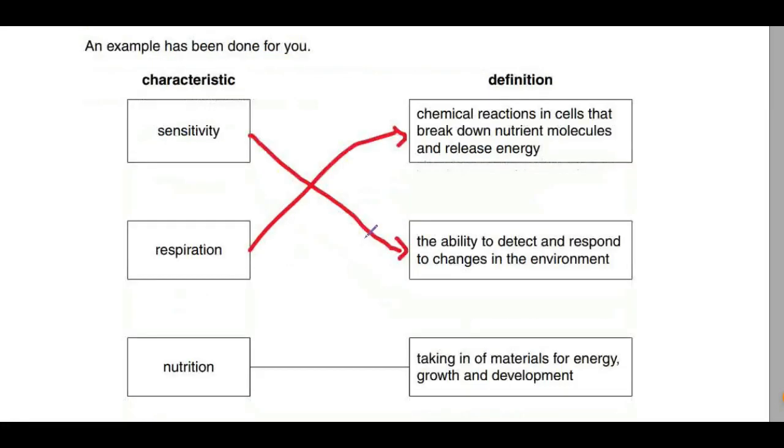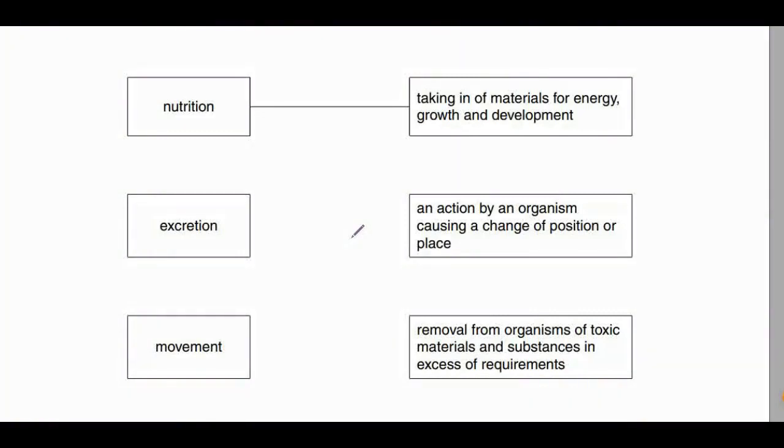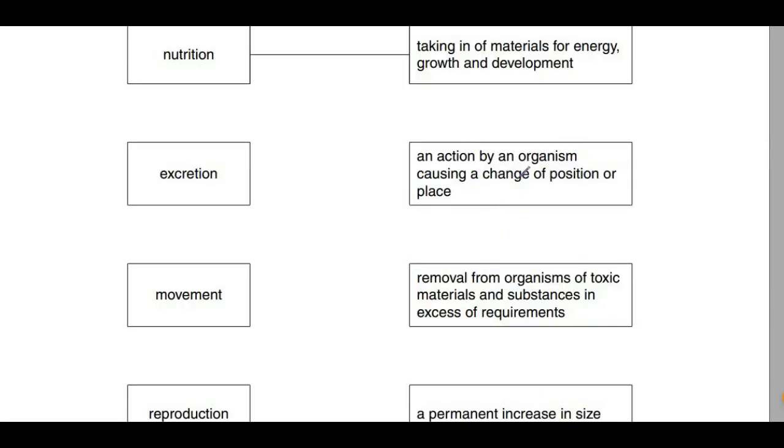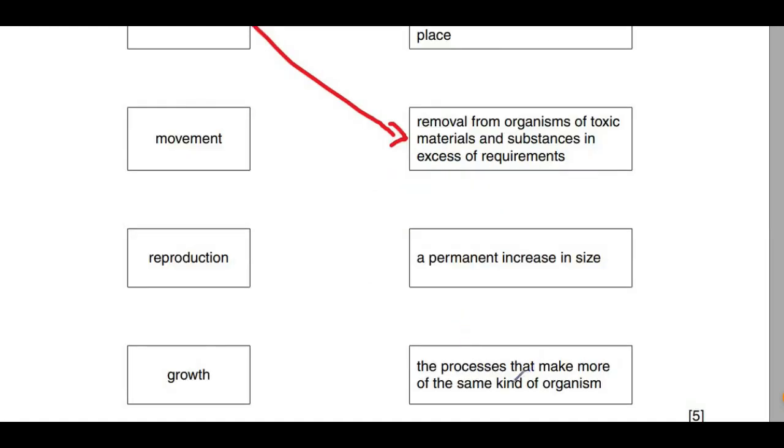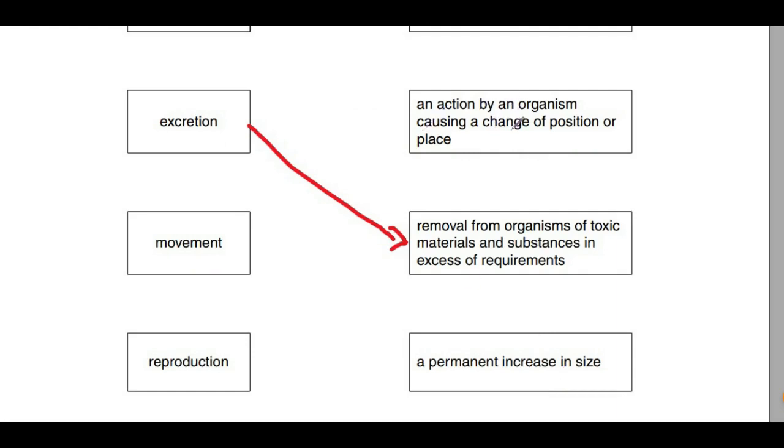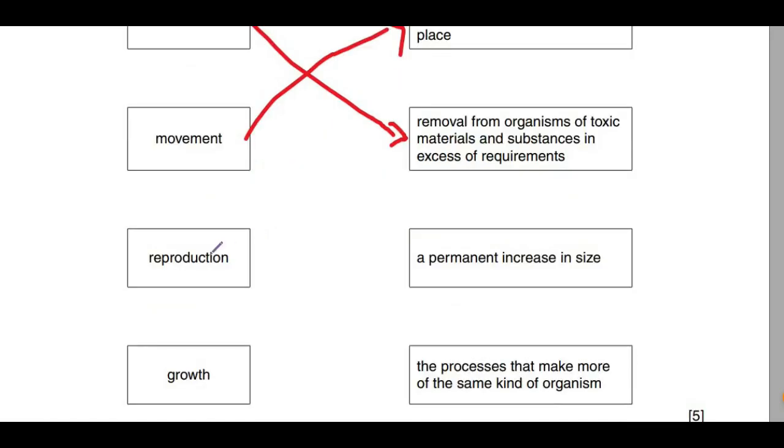Excretion is the removal of toxic metabolic waste from the body, so removal from organisms of toxic materials and substances in excess of requirements. Movement is an action by an organism causing a change of position or place. Reproduction is the process that makes more of the same kind. Growth is a permanent increase in size. If you didn't know these definitions, this is what they mean, so do well to remember them.